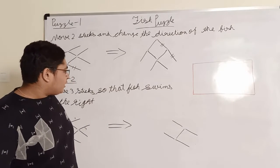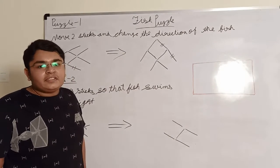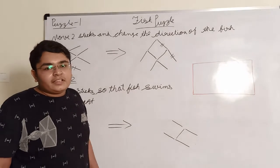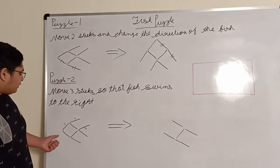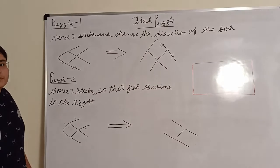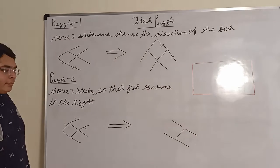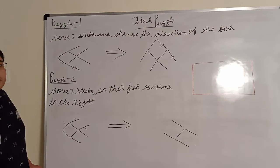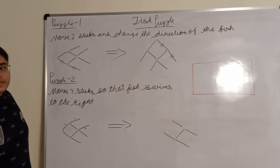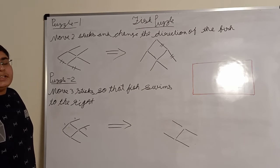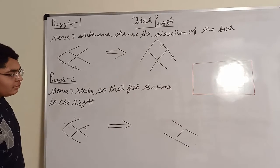So that the Feast can swim to the right side. Here, you can see that the Feast is swimming to the left side, but we have to change the direction of the Feast, so that the Feast can swim to the right side.